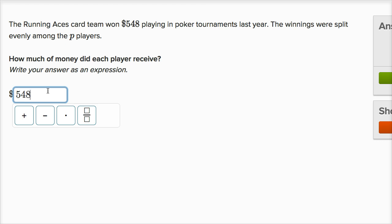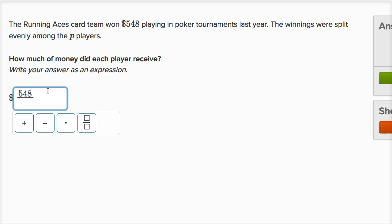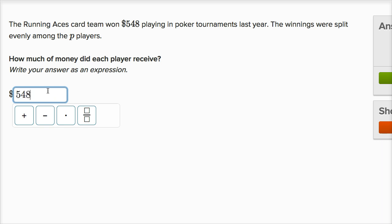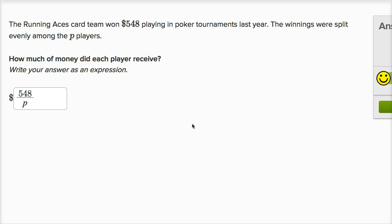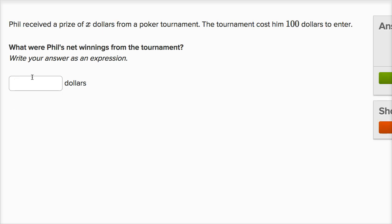So they're going to split it — I'll use a backslash here — 548 divided by P. We divide the amount of money by the number of players, and that's how much money each player actually receives.